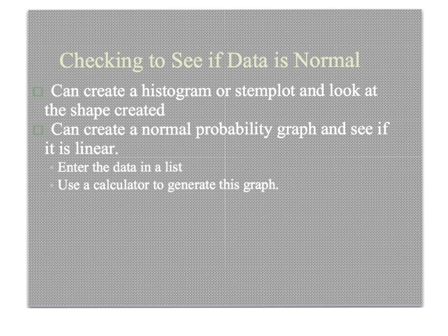But sometimes data is just not normal. It might be something else. So one of the almost obvious ways to check that is to create a histogram or a stem plot. Using a calculator or a computer to generate this and looking for that shape that we know as being normal where it's higher in the middle and lower on the ends.